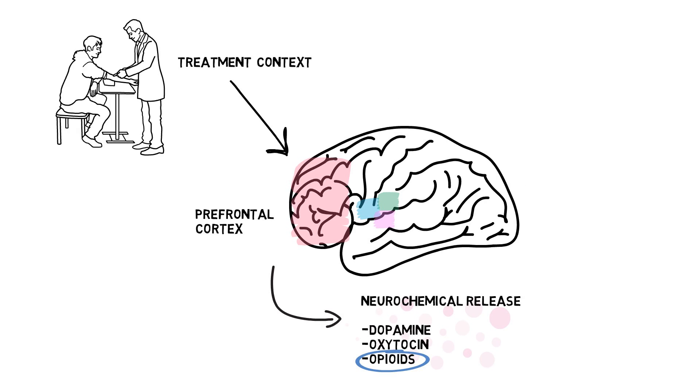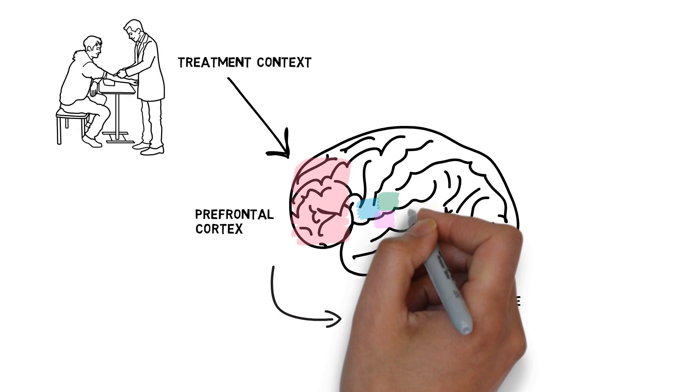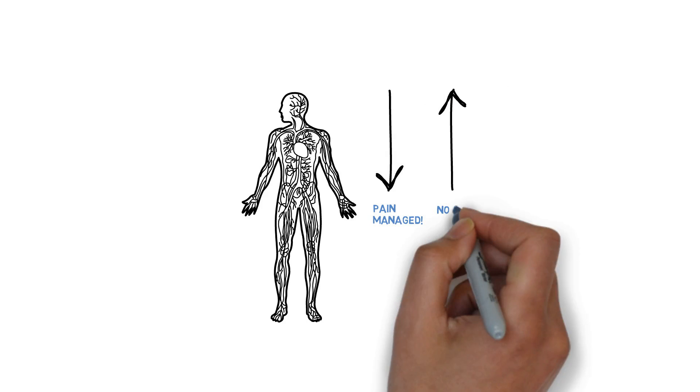In response to the placebo, all of these neurochemicals increase, causing even more opioid to be made by a brain region called the periaqueductal gray. These neurochemicals ultimately signal down to the spinal cord to say, hey, the pain has been managed. But placebo effects can also work the opposite way, from the bottom up, by decreasing activity of pathways coming from the spinal cord upwards that signal pain in the first place.